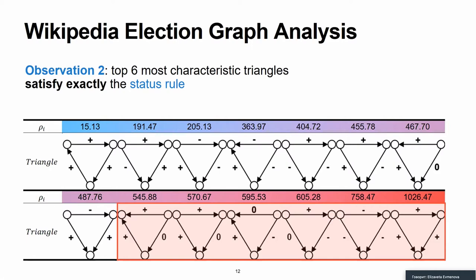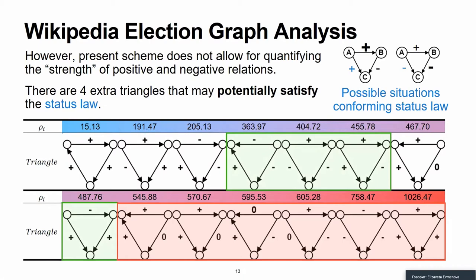However, the present formalism does not allow for quantifying the strength of positive and negative relations. Here on this slide, on the top, you can see two possible predictions colored blue using status law. On the first triangle, we can predict a positive relation if existing relation from A to B is more powerful than the positive edge we predict. On the second triangle, we can predict a negative relation if existing relation from B to C is more powerful than this negative edge we predict.